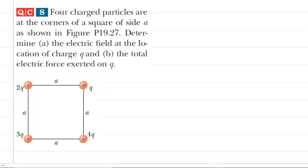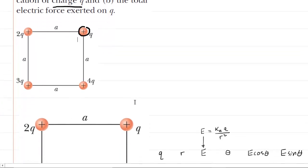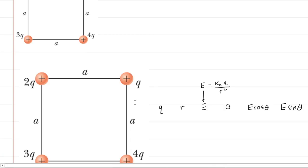Here we have the classic question in which you have four charged particles arranged on the corners of a square, and your job is to first determine the electric field at a particular location — in this case at the location of the charge marked Q. In order to help understand this question, we're going to zoom in on the picture.